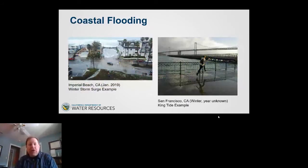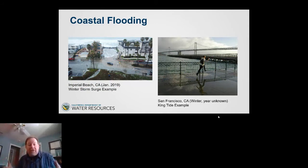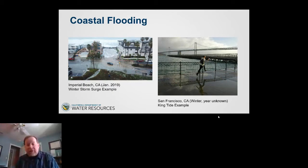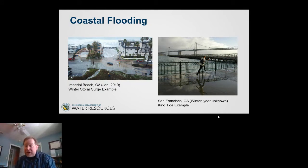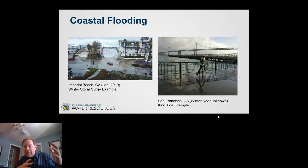Coastal flooding is another type. Here's Imperial Beach from January 2019, showing a storm surge where streets away from the beach are inundated. There's also a photo of a woman running along San Francisco's Embarcadero during a king tide — the annual tide related to the relationship of the earth, sun, and moon. It's an astronomical phenomenon that happens once or twice a year, but when a storm comes through during the winter solstice, that gravitational pull can bring a lot of water up — and with sea level rise, this is a growing problem.